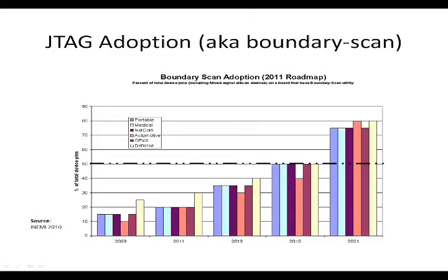Even though JTAG has been around for 20-plus years, the actual adoption rate of this technology has been pretty slow. One organization, INEMI, which stands for the International Electronics Manufacturing Initiative, has made it their mission to forecast and accelerate improvements in the electronics manufacturing industry for a sustainable future. INEMI is made of a consortium of approximately 100 leading-edge electronics manufacturers, suppliers, associations, government agencies, and universities. One of their projects was to study the rate of JTAG adoption, and this chart essentially shows the JTAG adoption rate by the silicon vendors, given in terms of device pins that are JTAG compliant. If you have a 100-pin device in 2013, you can expect roughly 35% of those pins to have JTAG capability.